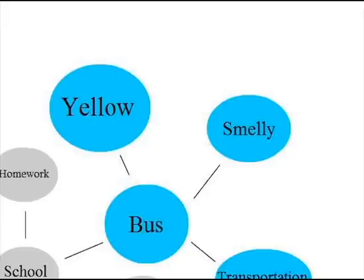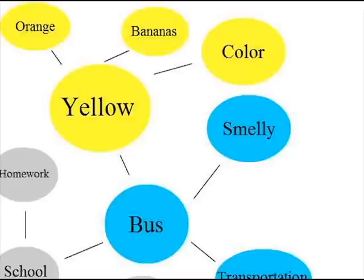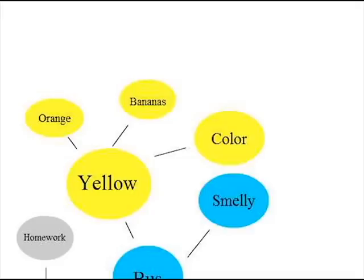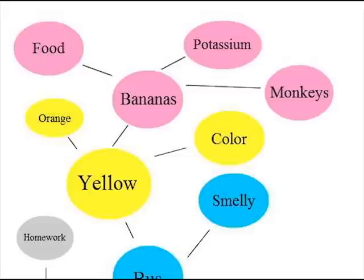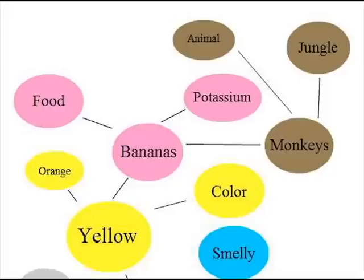Let's expand the network even further. Yellow can be connected to color, orange, and banana. And banana can be connected to food, potassium, and monkeys. Then, monkeys can be connected to animal and jungle. We can also connect back to other places in the graph, such as back down to smelly.